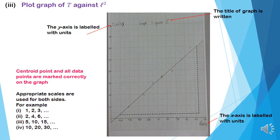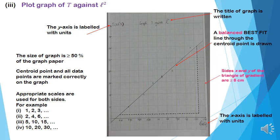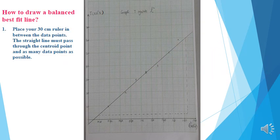Centric point and all data points are marked correctly on the graph. A balanced best fit line is drawn through the centric point and as many data points as possible. The size of the graph is at least 50% of the graph paper. The size of x and y of the triangle used for the gradient are at least 8 cm long.